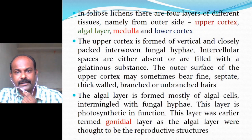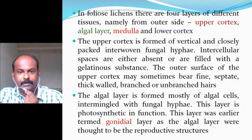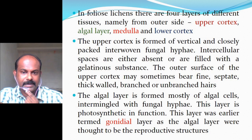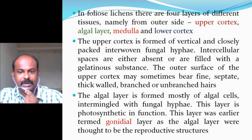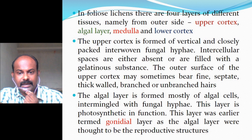In foliose lichens there are four layers: upper cortex, algal layer, medulla, and lower cortex. The upper cortex is formed of vertical, closely packed interwoven fungal hyphae with intercellular spaces either absent or filled with gelatinous substance. The algal layer is formed mostly of algal cells intermingled with fungal hyphae. This layer is photosynthetic and was earlier termed the gonidial layer, as the algal layer was thought to be reproductive in nature.